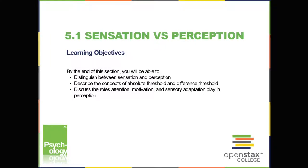5.1: Sensation vs. Perception. Learning Objectives: By the end of this section, you'll be able to distinguish between sensation and perception, describe the concepts of absolute threshold and difference threshold, and discuss the roles attention, motivation, and sensory adaptation play in perception.